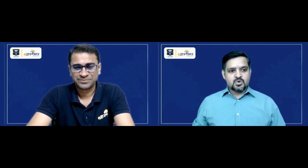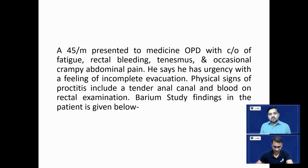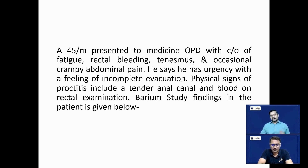Let me share a question with you. A 45-year-old male presented to the medicine OPD with complaints of fatigue, rectal bleeding, tenesmus, and occasional crampy abdominal pain. He has urgency with a feeling of incomplete evacuation. Physical signs of proctitis include a tender anal canal and blood on rectal examination. Barium study finding in the patient is given below.